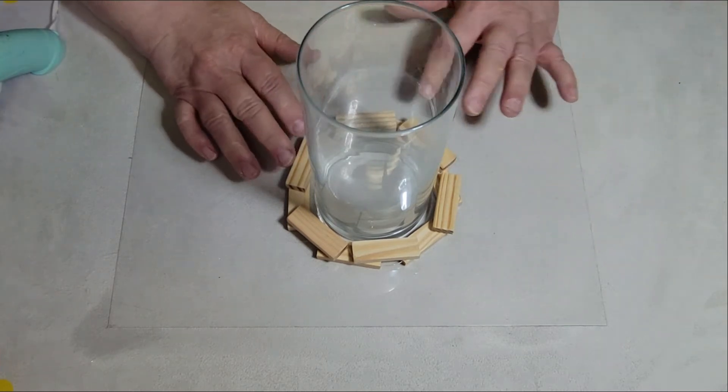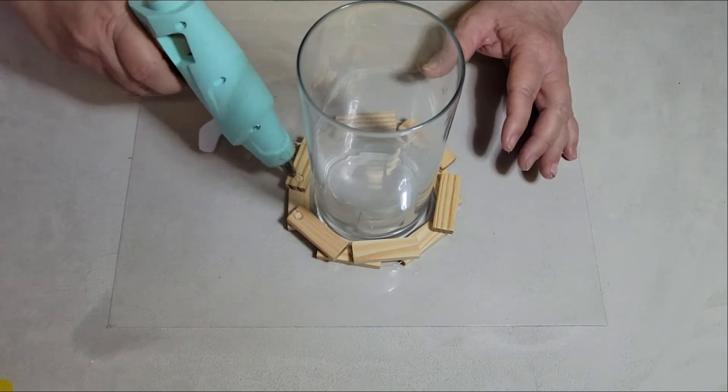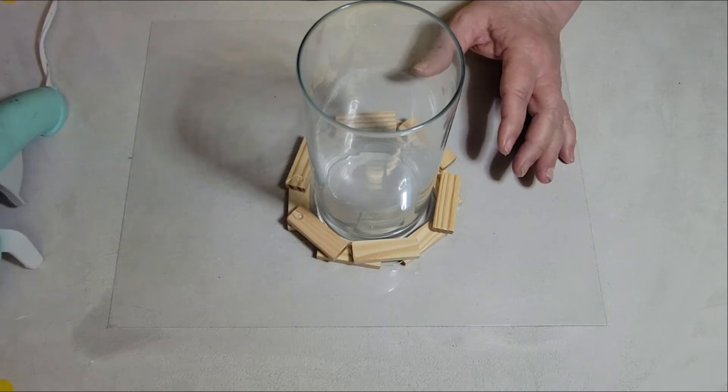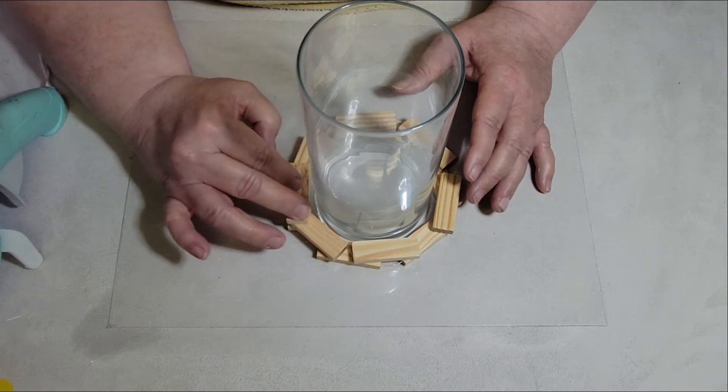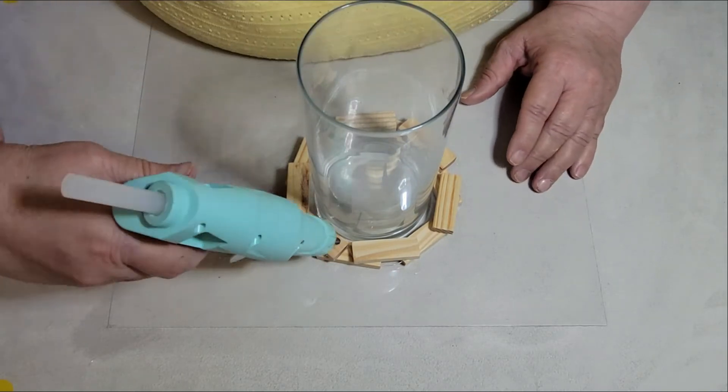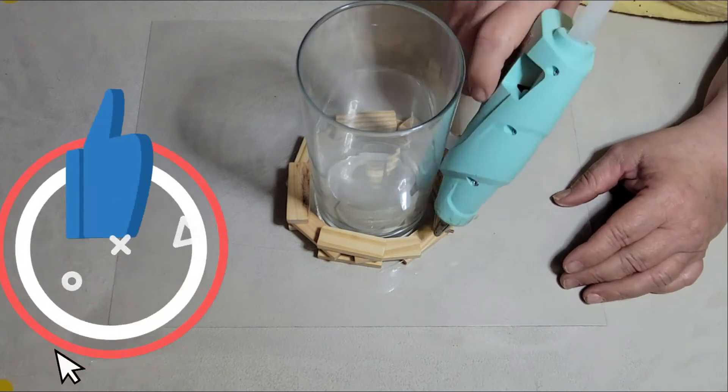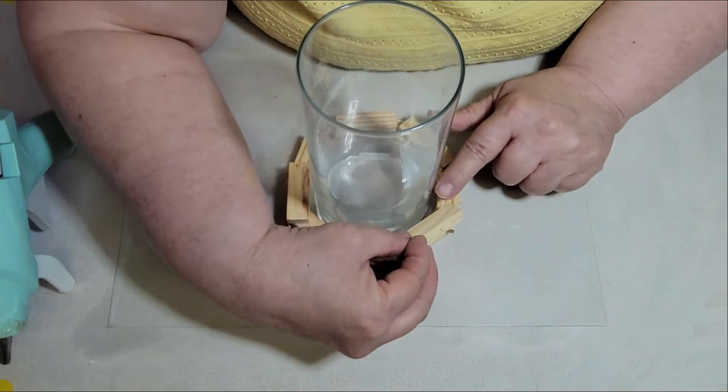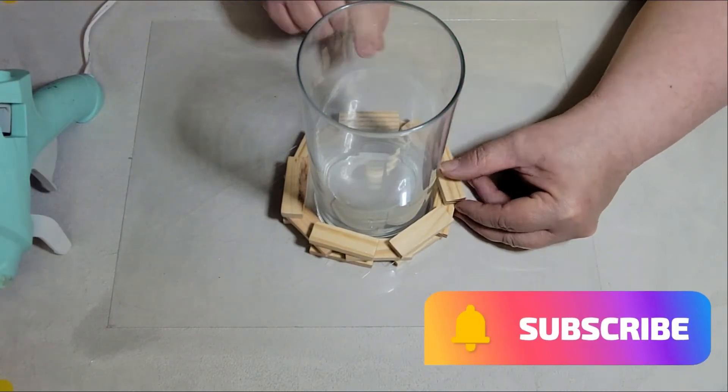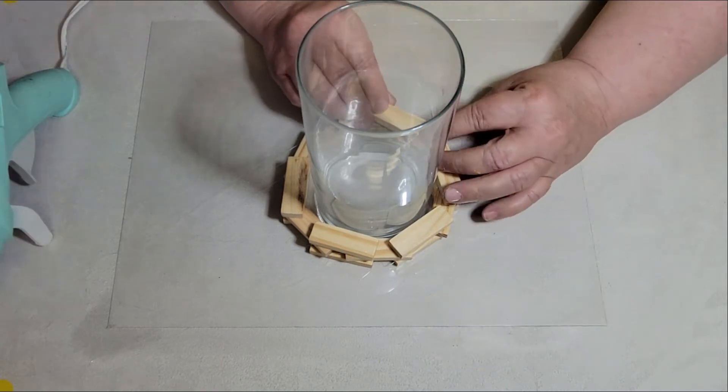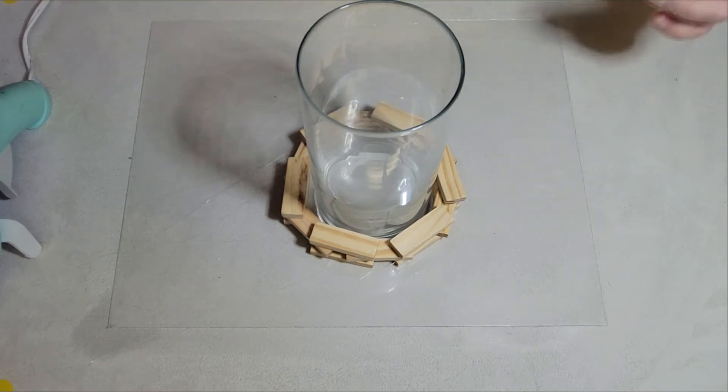And then you're going to start up with the next row. That one, you're just going to go back and put them back the same way they were the very first ones. Try to keep them even if you can. It'll just look nicer that way. And then just keep going all the way to the top.